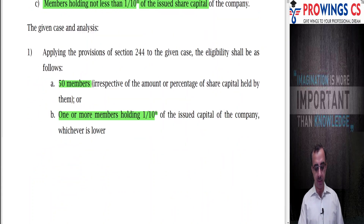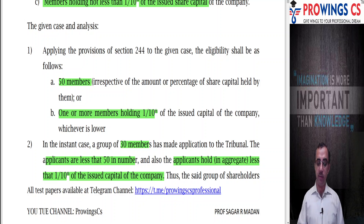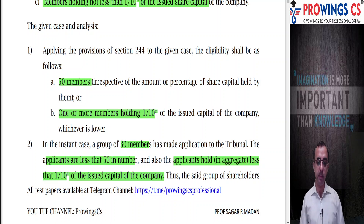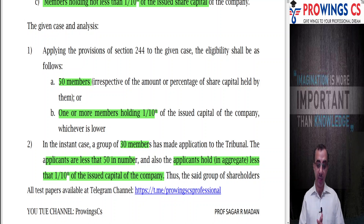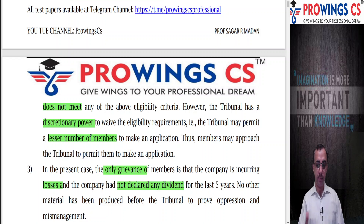Applying the provisions of Section 244: the eligibility threshold is 50 members (1/10th of 500) irrespective of the percentage of capital, and also one or more members holding 1/10th of the issued capital, whichever is lower. In this case, the group of 30 members made the application - they are less than 50 members and in aggregate hold less than 1/10th of the capital, so the group did not have sufficient standing to file.